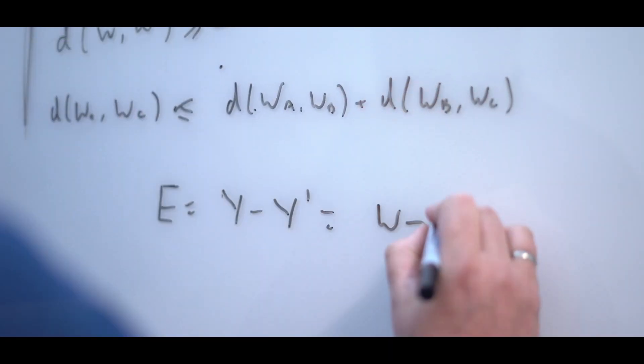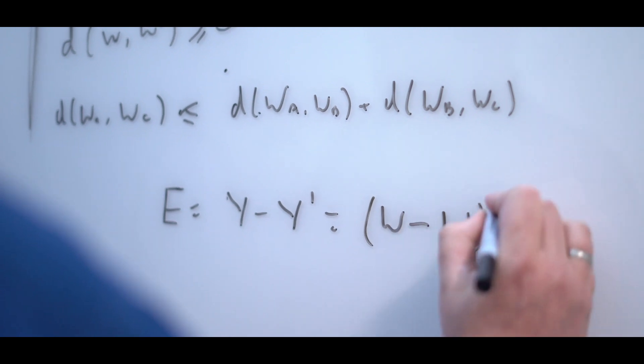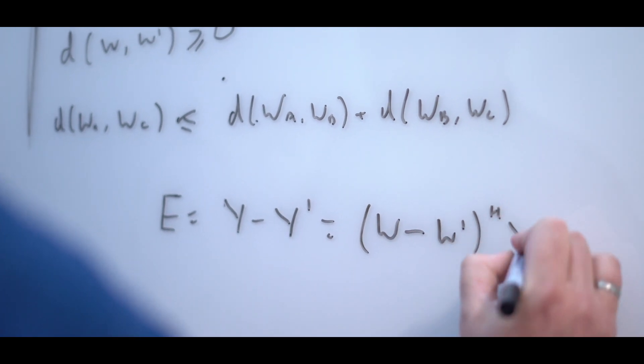What we're trying to do with blind source separation is to take the mix of those sources as they appear at the microphones, and take that mix and separate it out into the individual sources.